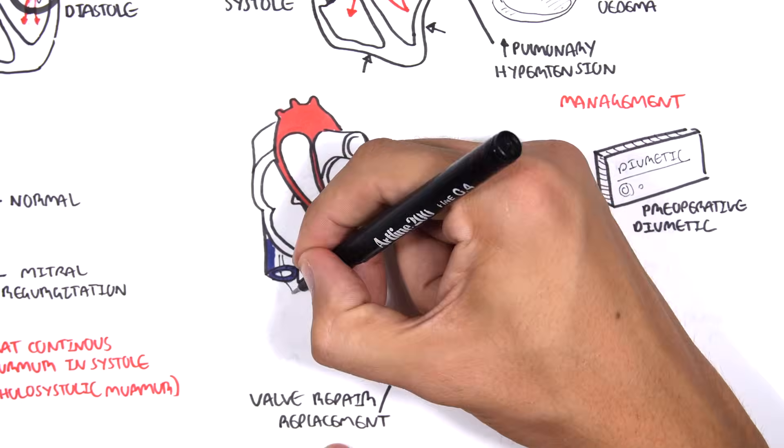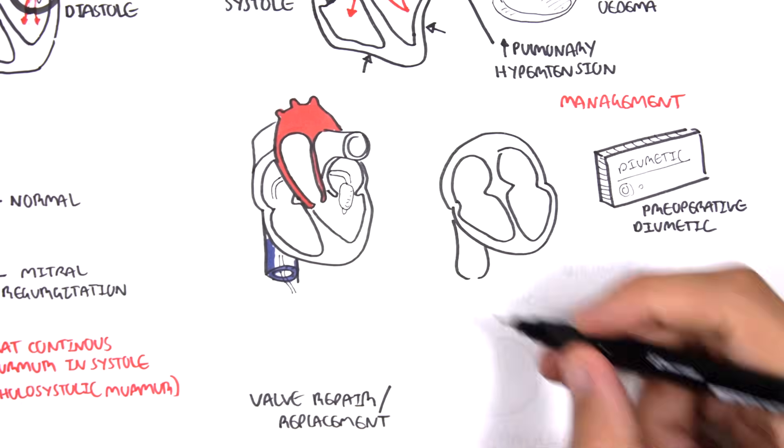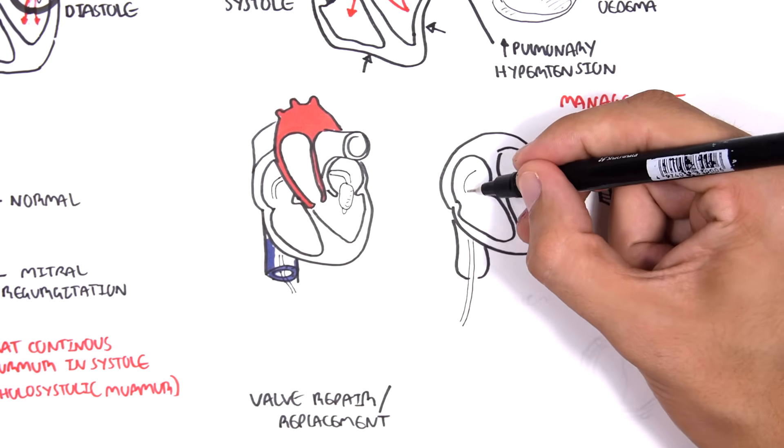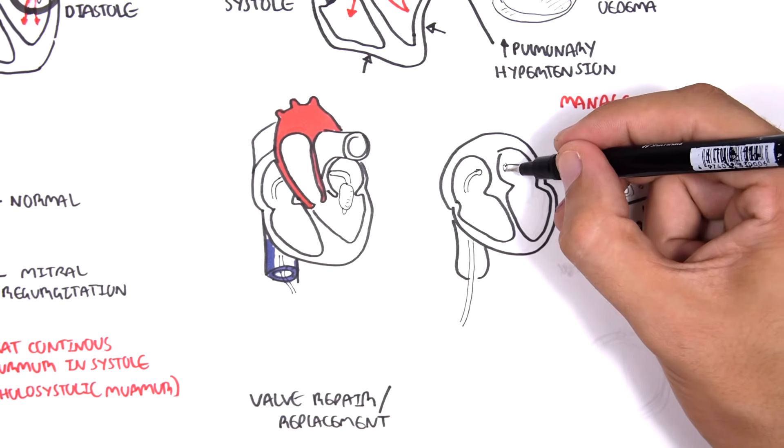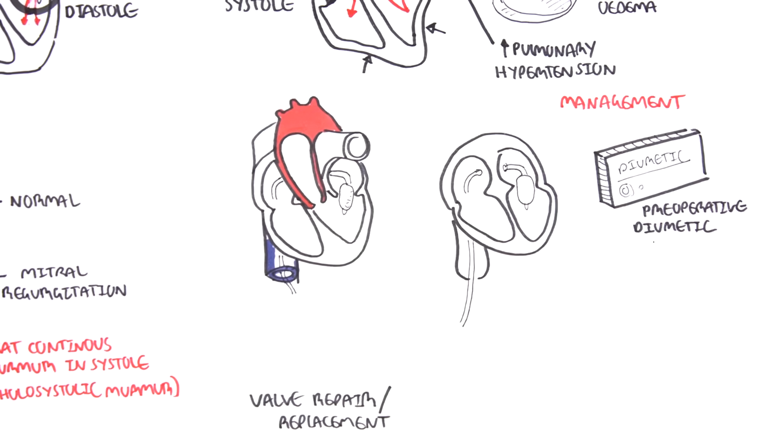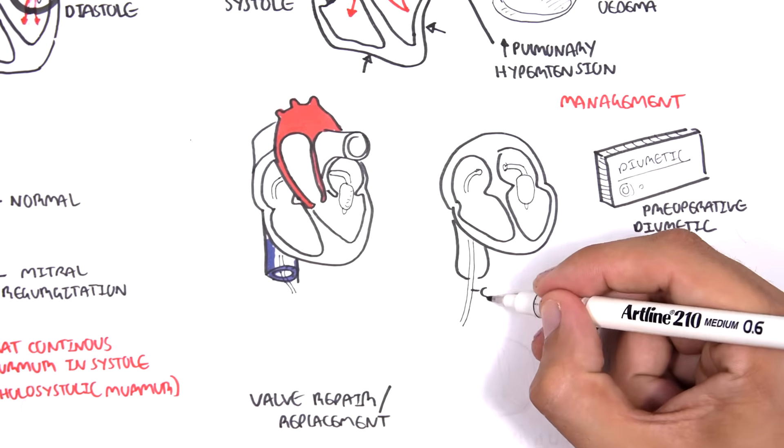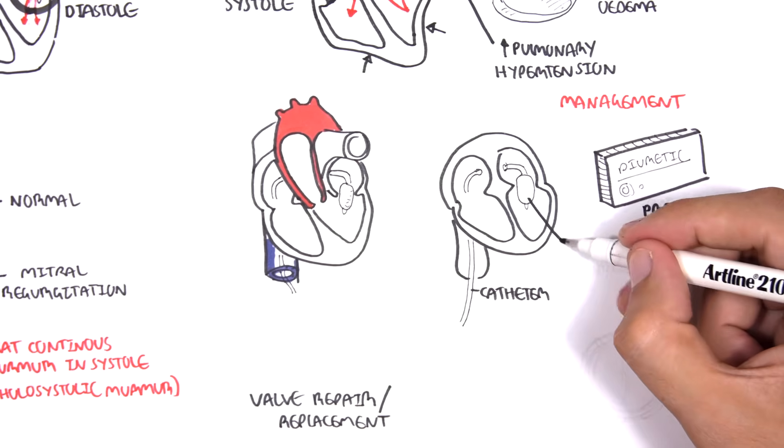Surgeons can perform valvuloplasty, where a catheter is introduced from the femoral vein up and through the foramen between the atria, where the balloon will help dilate the mitral valve.